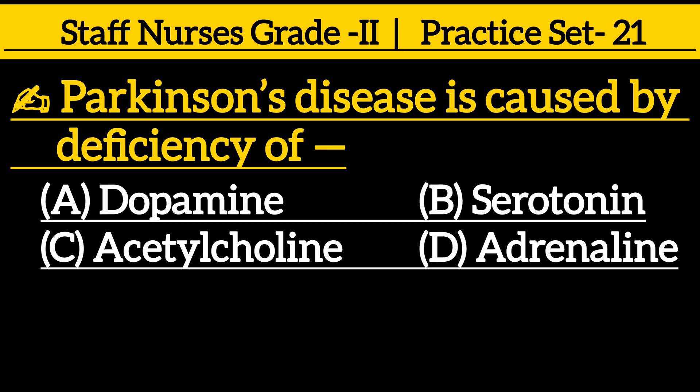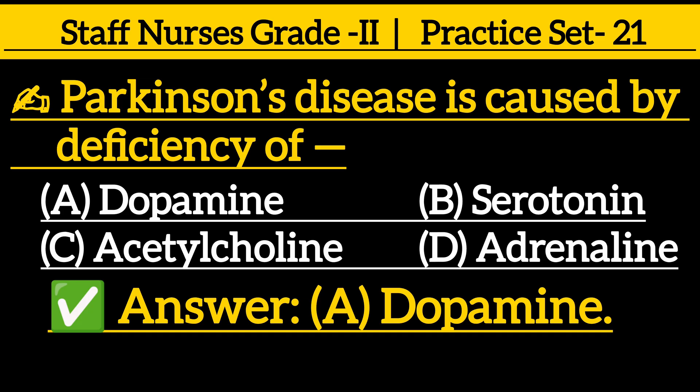Parkinson's disease is caused by deficiency of: Option A, dopamine; Option B, serotonin; Option C, acetylcholine; Option D, adrenaline. Correct answer is Option A, dopamine.